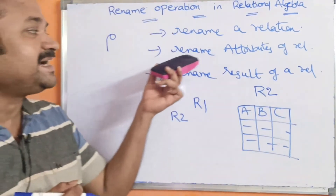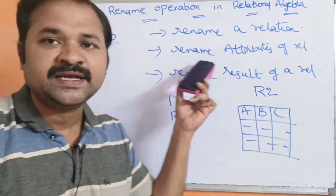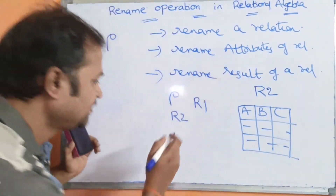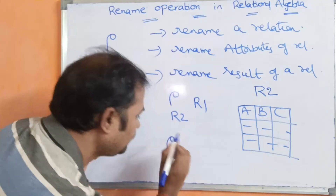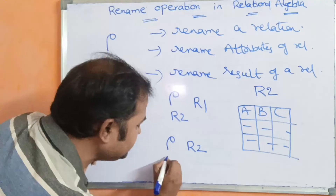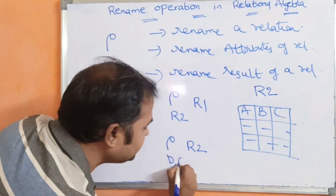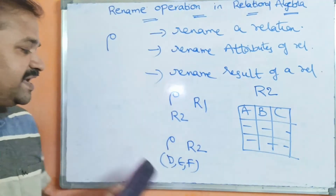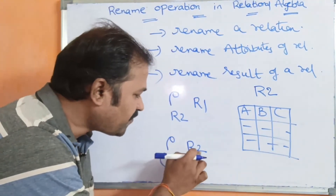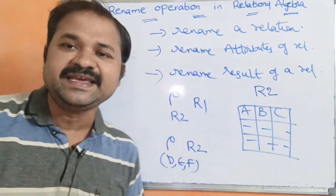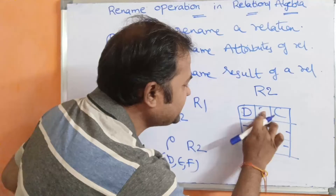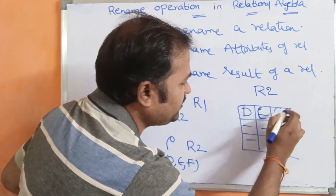The second task of the rename operator is to rename the attributes of a relation. Using rho on relation R2, previously we had A, B, C as the attributes. Let us rename those attributes to D, E, F. Whenever the statement is executed, the attributes of R2 are modified to D, E, F — so A is modified to D, B to E, and C to F.